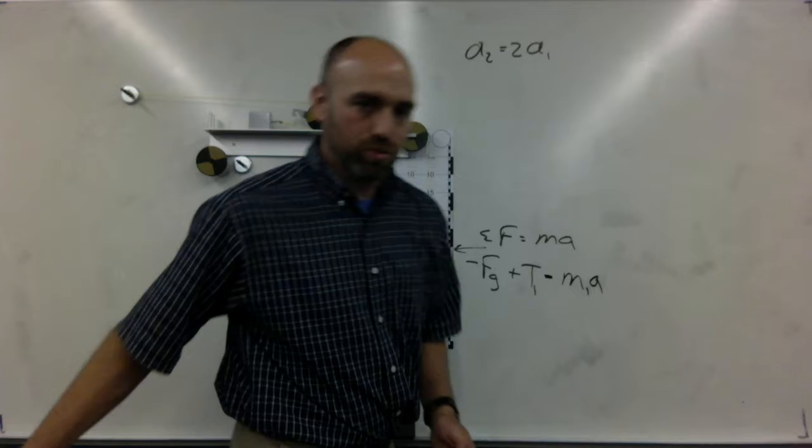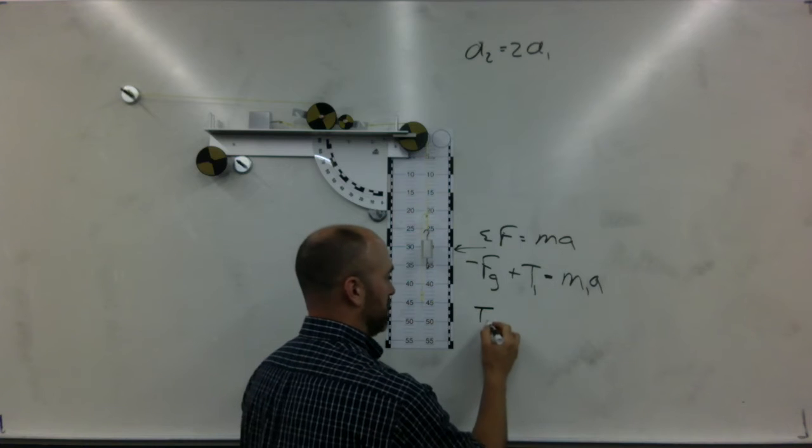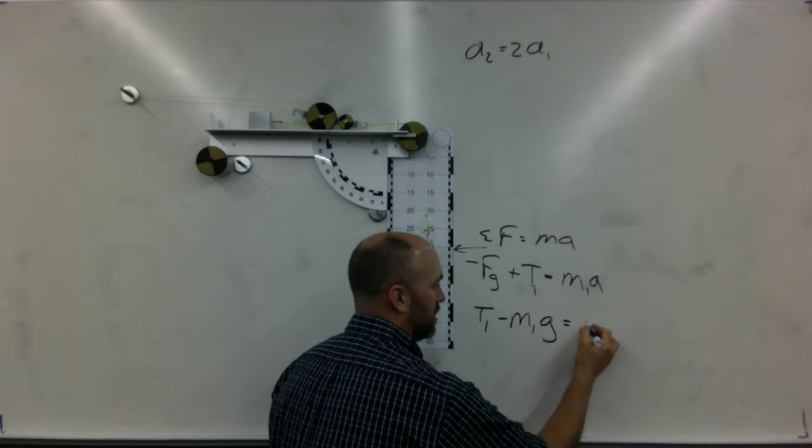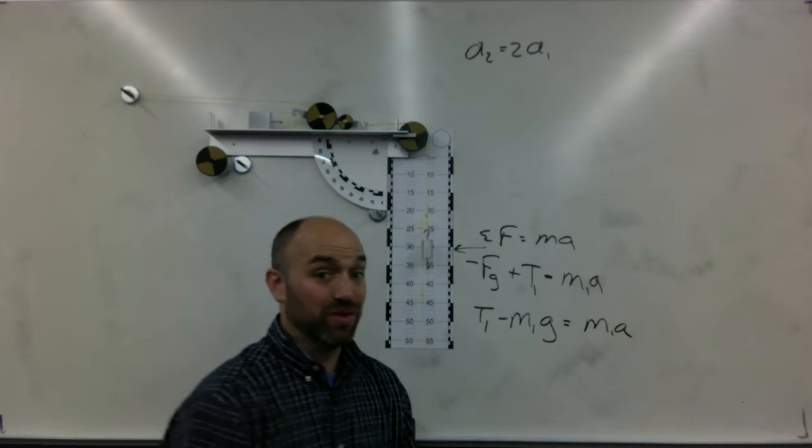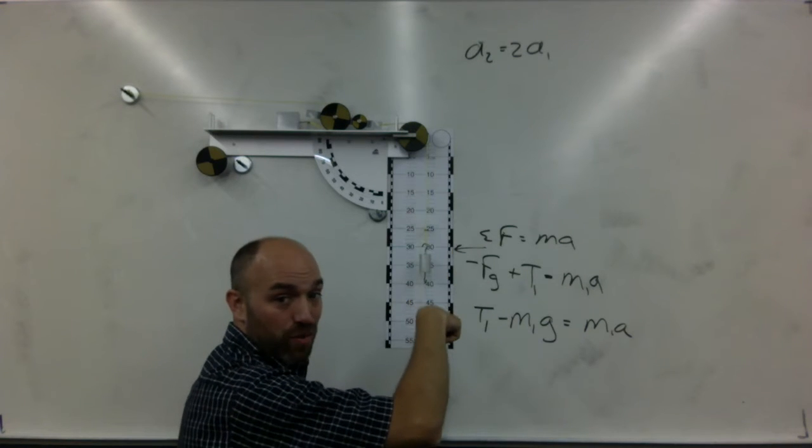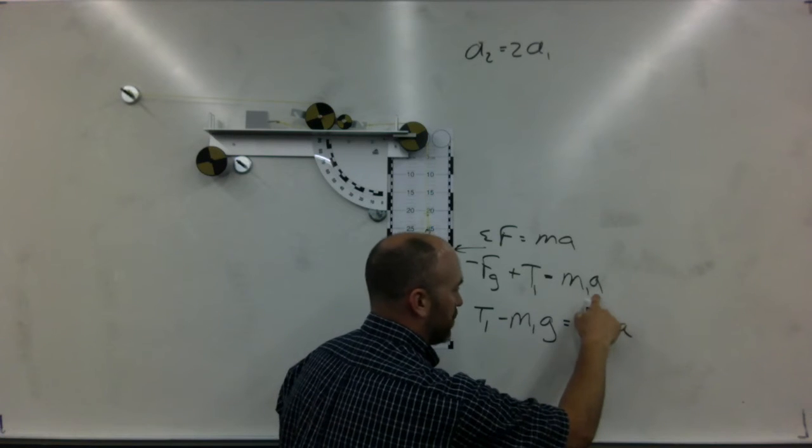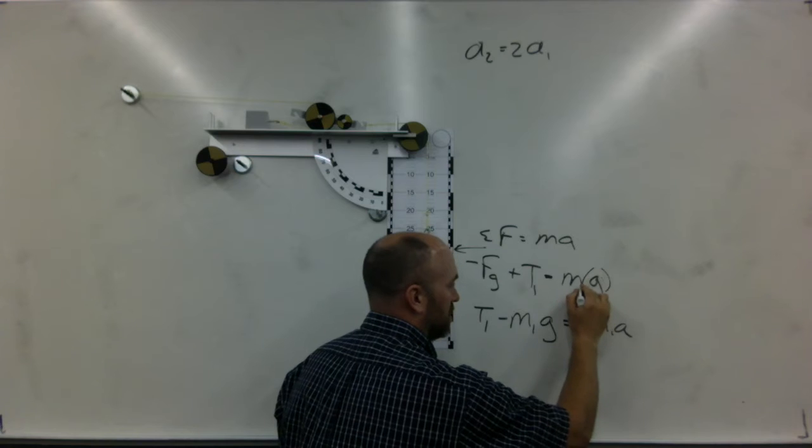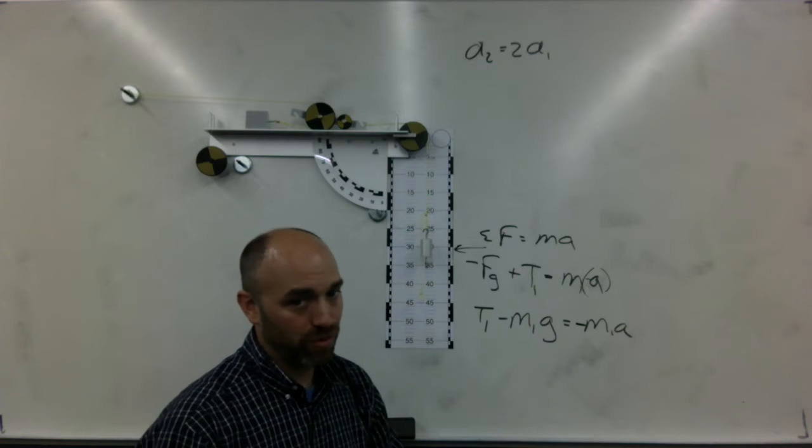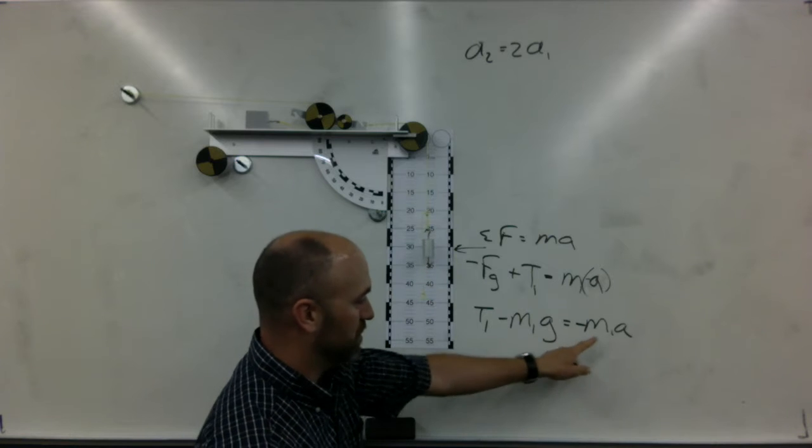And this is gonna equal to M times A, and this is M1. Let me write this out one more step here, and flip this order so I have positive first. Tension minus M1 times G equals M1 times A. That's one more catch. Notice this mass accelerates down. So this acceleration is negative, which makes this term negative. That's a very important little negative sign there. So we've got tension minus M1 G equals negative M1 A.